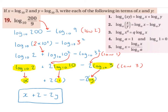Now I have log base 10 of 2, plus 2 log base 10 of 10, minus 2 log base 10 of 3. I want to rewrite in terms of x and y. Log base 10 of 2 swaps straight to x. For log base 10 of 10, Law 4 tells us that log base a of a equals 1, so log base 10 of 10 equals 1, giving 2 times 1 equals 2. Log base 10 of 3 swaps to y, giving minus 2y.